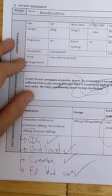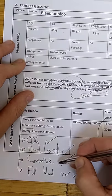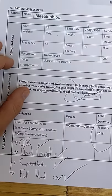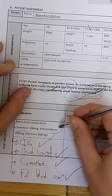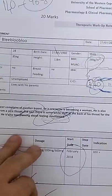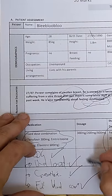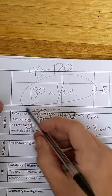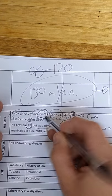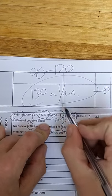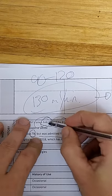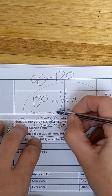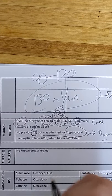So we have that he was started on tenofovir and emtricitabine efavirenz. So already now, you have to know what is the baseline test that we should have done. CD4, viral load, creatinine, full blood count. Those are four things that we needed. Because we do it at the start, and then we monitor it later to see that is it going well with this patient on this therapy? Or is this therapy maybe an issue for you?